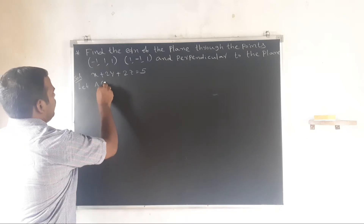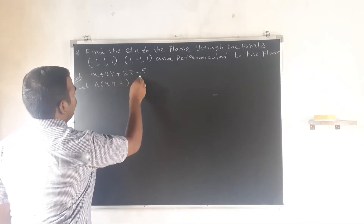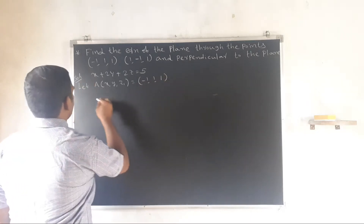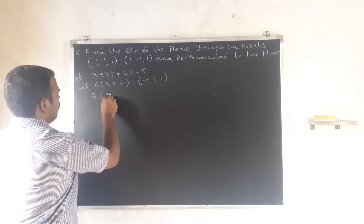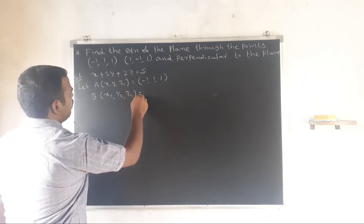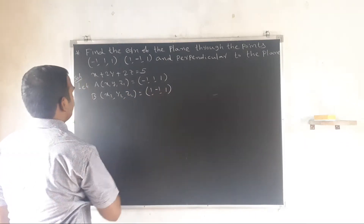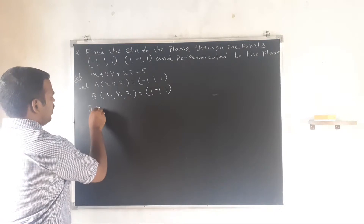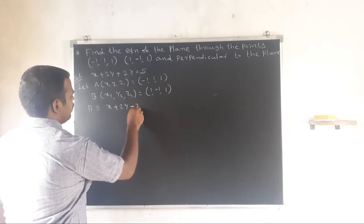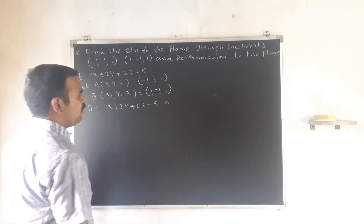Let A: (x1, y1, z1) equal to (-1, 1, 1). And B: (x2, y2, z2) equal to (1, -1, 1). The plane φ is identically equal to x plus 2y plus 2z minus 5 equal to 0.